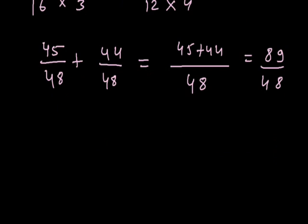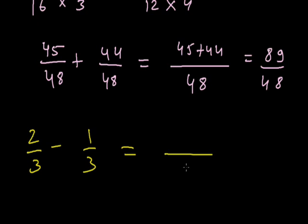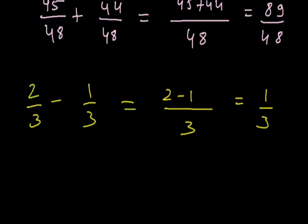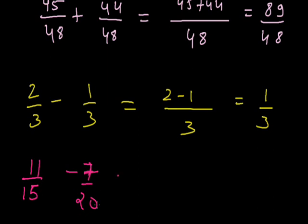Now, the same thing we have to do in the subtraction, only we have to subtract the numbers. If we are given 2 by 3 minus 1 by 3, when the denominators are same, it is simple. We have to write the denominator and simply subtract the numerator. It will be equal to 1 by 3. Now, when the denominators are not same, for example, we have to subtract 7 by 20 from 11 by 15. Here the denominators are not same, so we have to take the LCM.